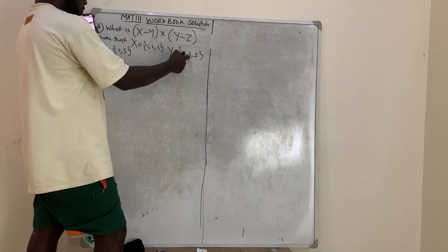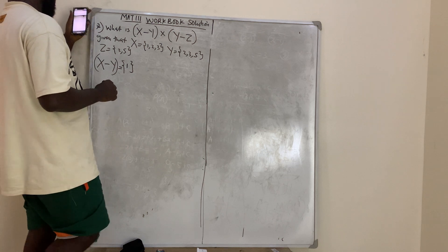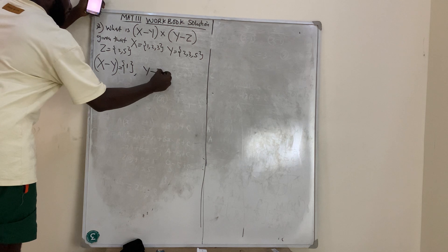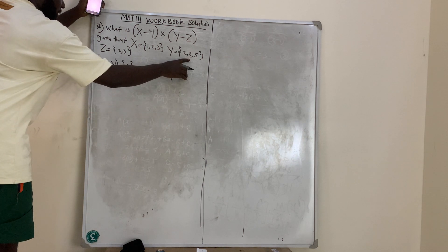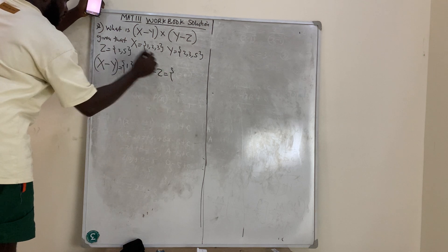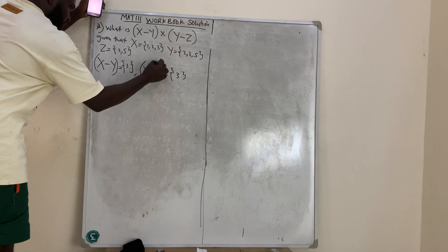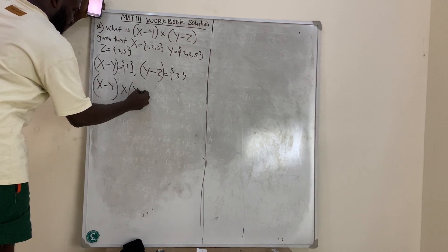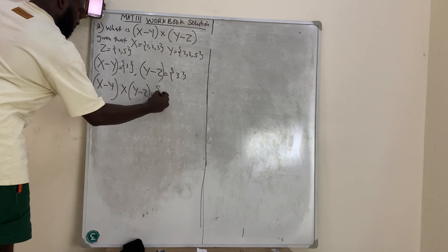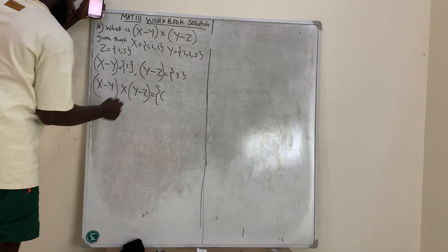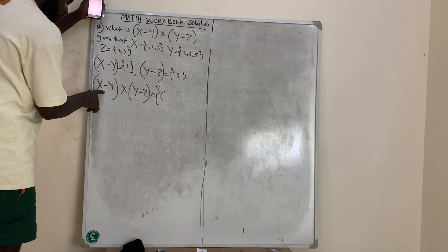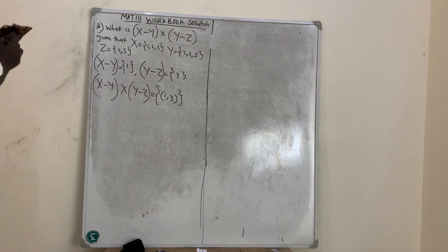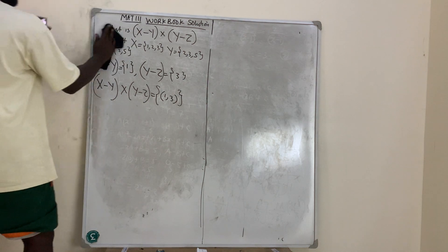Two and three are both in X and Y, so X minus Y = {1}. Next, Y minus Z is anything in Y that is not in Z. Three is in Y but not in Z, so Y minus Z = {3}. Therefore (X minus Y) cross (Y minus Z) = {(1, 3)}. That is the answer for question 32.